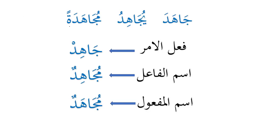Applying this to our main example: جاهَد يُجاهِد مُجاهَدةً. فعل الأمر: we drop the مضارع marker and make the ending ساكن — if it is still readable, the أمر is ready. So فعل الأمر is جاهِد. اسم الفاعل: change يُ to مُ and add تنوين — مُجاهِد (with كسرة on second-last letter). اسم المفعول: مُجاهَد (with فتحة on second-last letter).